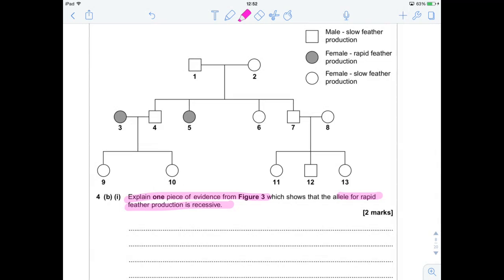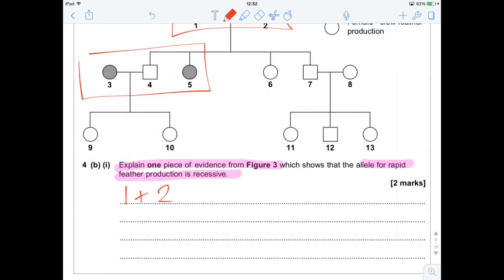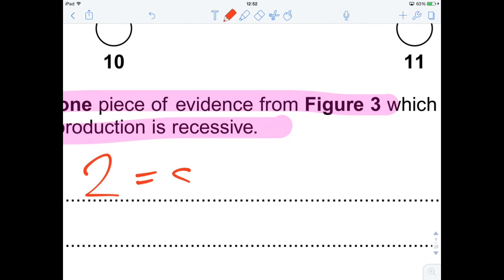here are two slow feather producers who have rapid feather producing children in individuals 3 and 4. And that is the easiest one to go for, so we can say that 1 and 2, what are they? They are slow feather producers. 3 and 5 are fast, and we can say that 4 is slow.